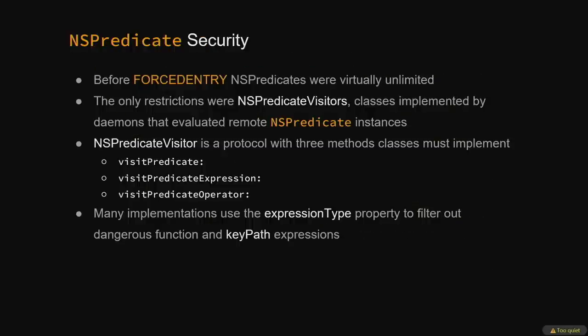Before forced entry, NSPredicate scripts were essentially unrestricted, with the exception of predicates sent over XPC. These predicates were often limited using NSPredicateVisitors — implementations of a protocol with methods to check what the components of an untrusted NSPredicate were and whether they were safe to evaluate. These implementations use the expression type property to check what expressions were, potentially allowing only specific selectors or key paths. Without these restrictions, NSPredicates were basically arbitrary code execution, and they were used as such in the forced entry sandbox escape.